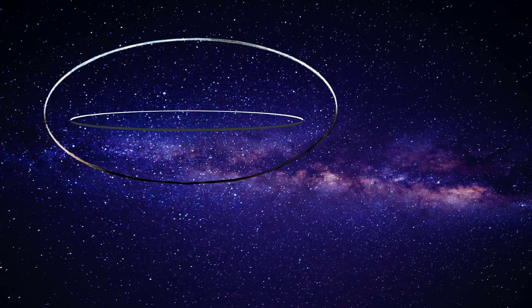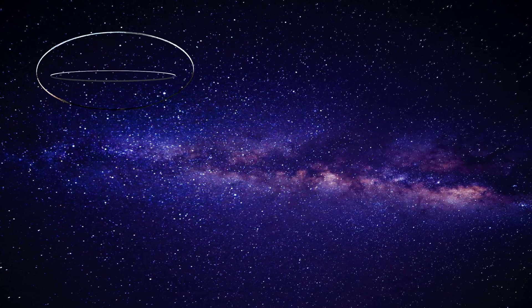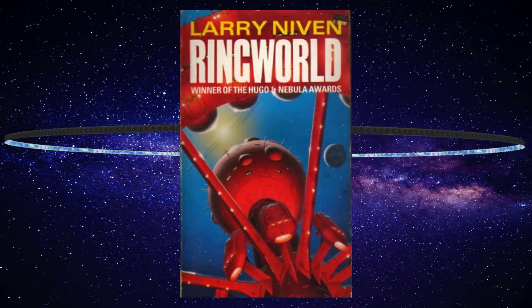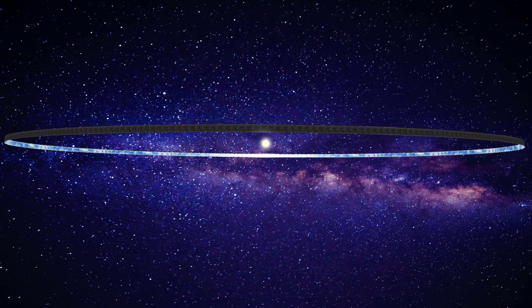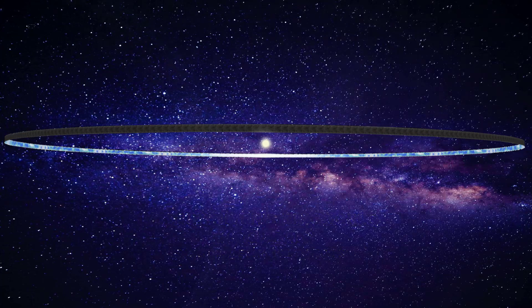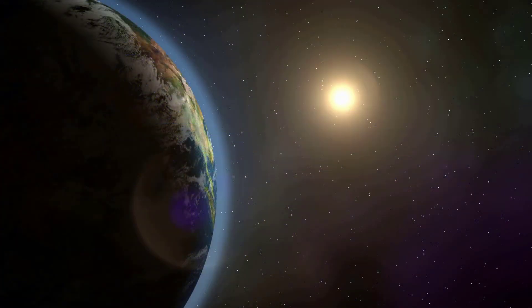But sadly, even these pale in comparison to Larry Niven's original ringworld, which is perhaps the most famous of all these megastructures. It was showcased in the Known Space book or novel. This is an enormous ring with a diameter of 305 million kilometers, roughly the size of Earth's orbit around the Sun.